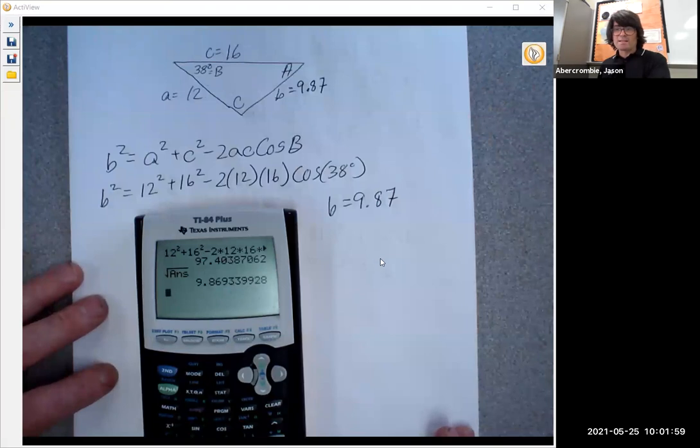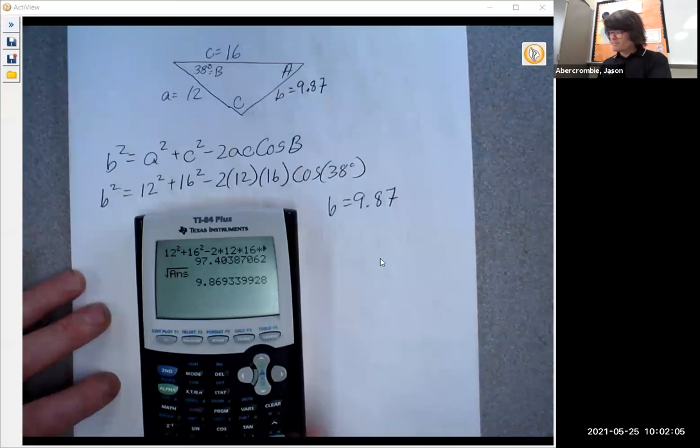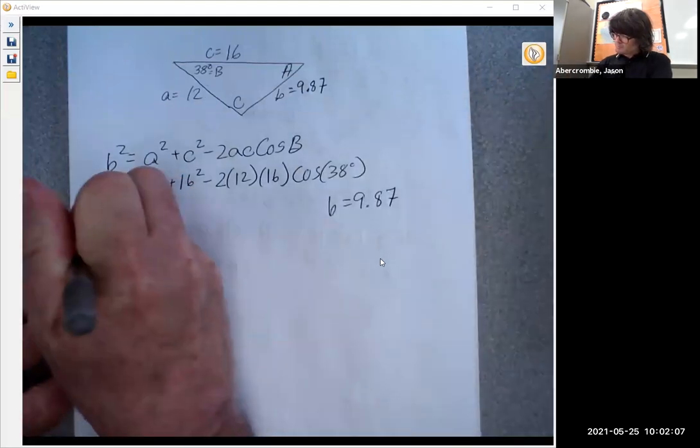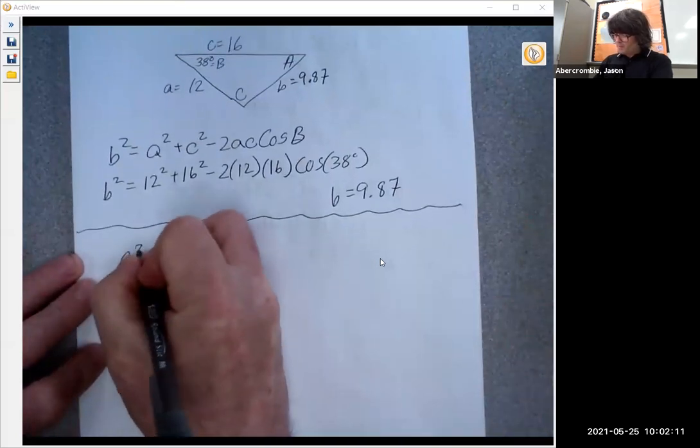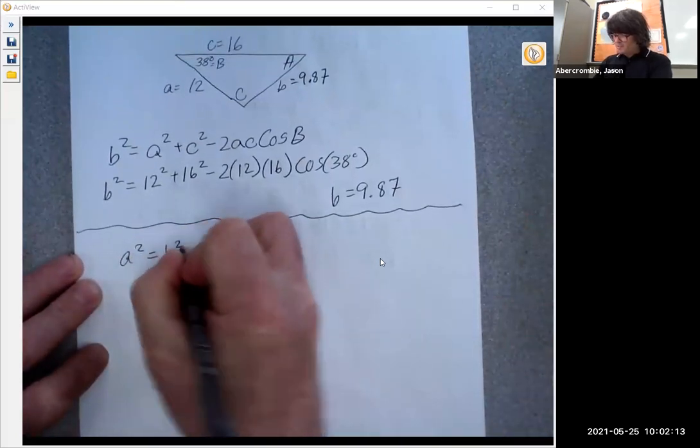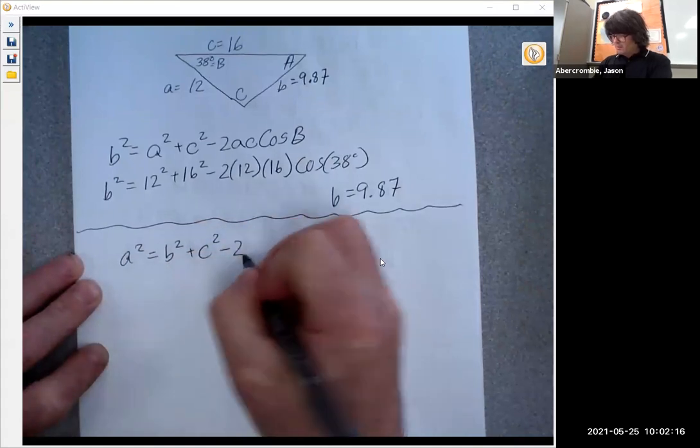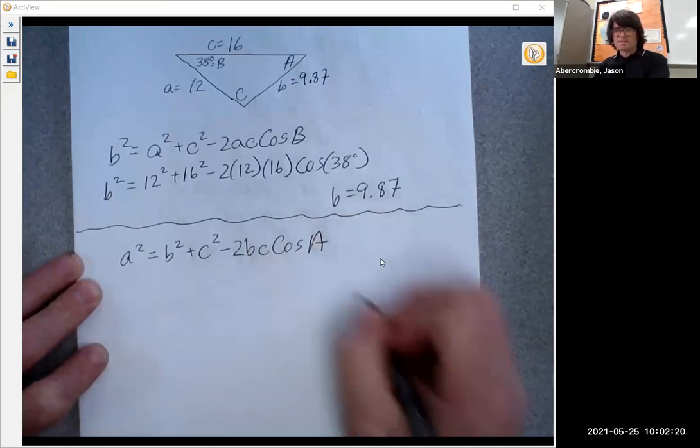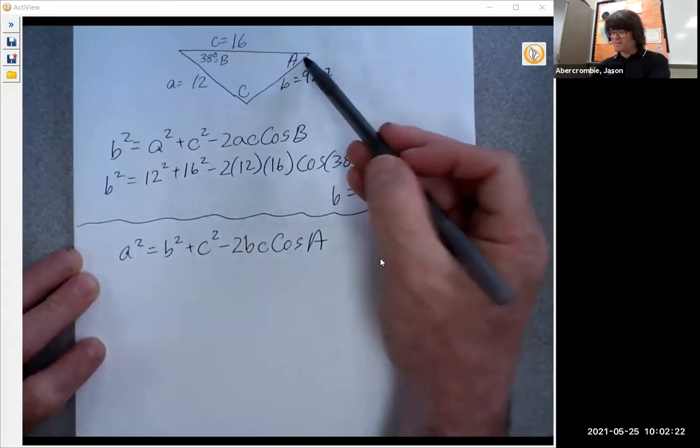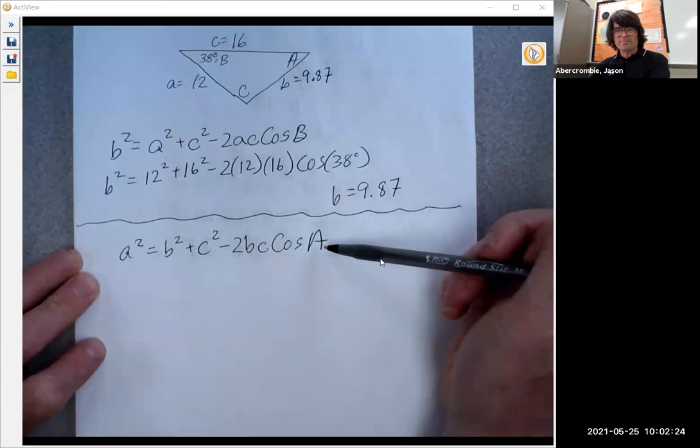Now we have all three sides and we need an angle. So we can choose to get any angle we want. Perhaps we'll just get angle A. This time I want A squared equals B squared plus C squared minus 2BC cosine A. The reason I picked this is because I was going to get angle A and this is the only version that has angle A in it.